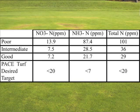The Pace Turf targets are at the bottom of the table: 20 parts per million nitrate nitrogen, less than 7 parts per million ammonium nitrogen, and less than 20 parts per million total nitrogen — equivalent to one pound of N per thousand square feet. Looking at the poor area, we're picking up 14 parts per million nitrate nitrogen, which is within the guidelines. But ammonium nitrogen at 87 parts per million is way above the desired 7 parts per million target. With a total of 101 parts per million, that's equivalent to about 5 pounds of N per thousand square feet — so that gives us an idea of where the problem is.